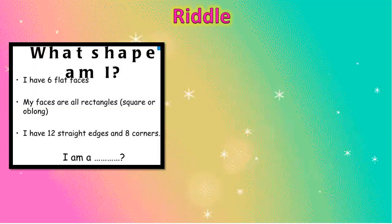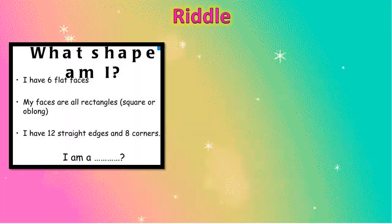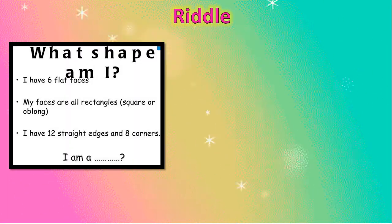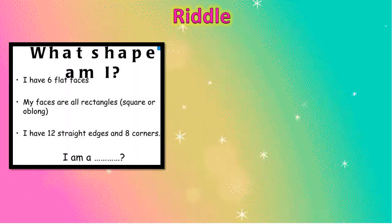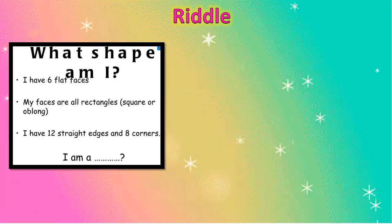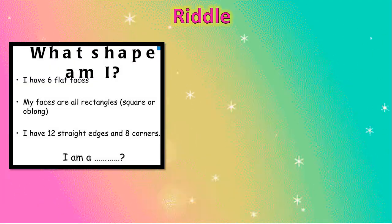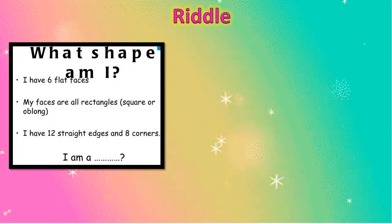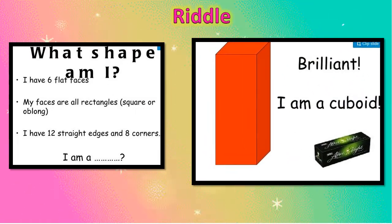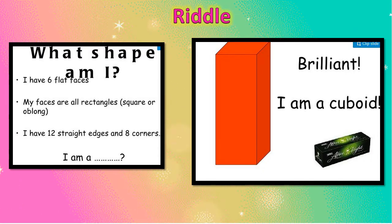I have 6 flat faces. My faces are all rectangles. I have 12 straight edges and 8 corners. Guess the shape which has 12 edges and 8 corners. Brilliant, I am a cuboid! And you know very well that the cuboid looks like your tissue box.